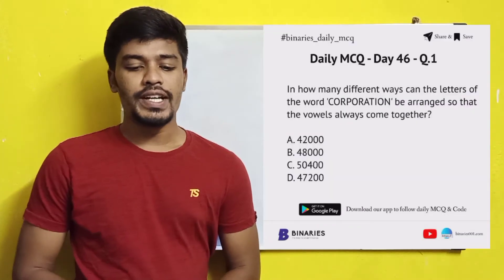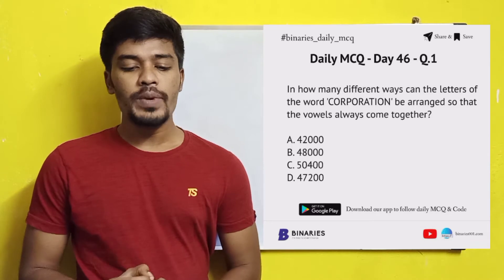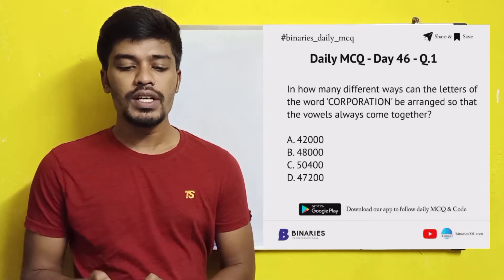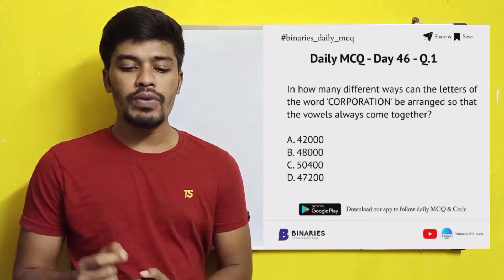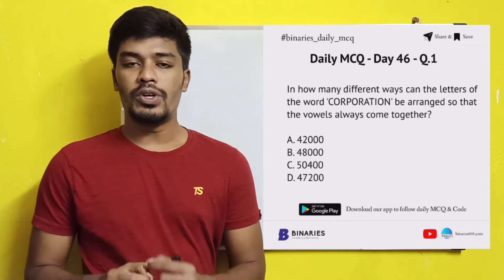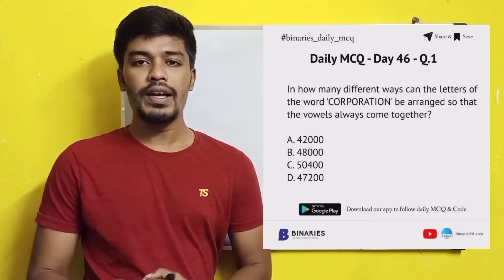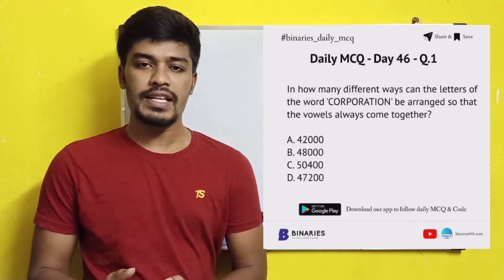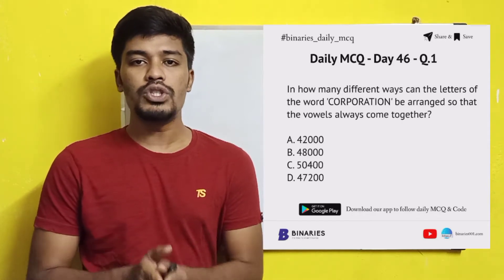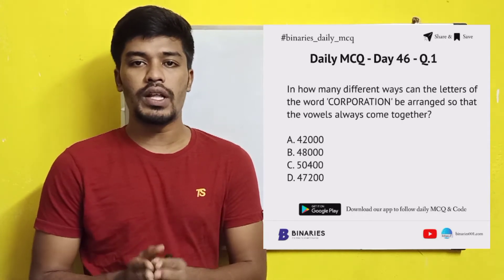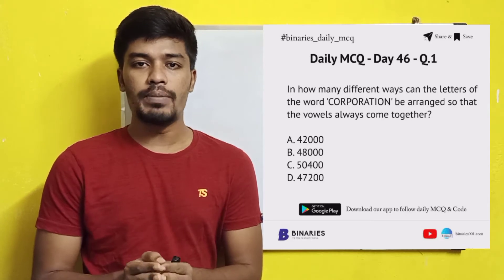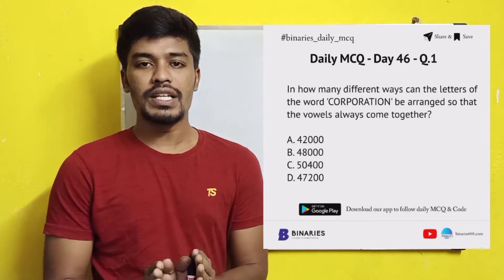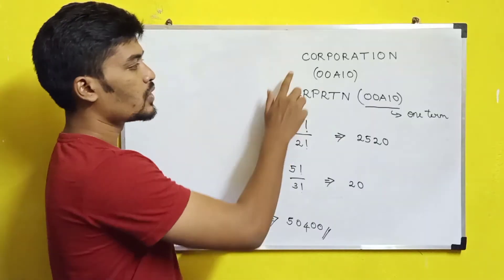The first question is: in how many different ways can the letters of the word CORPORATION be arranged so that the vowels always come together? Vowels always come together means all the vowels should be beside each other.